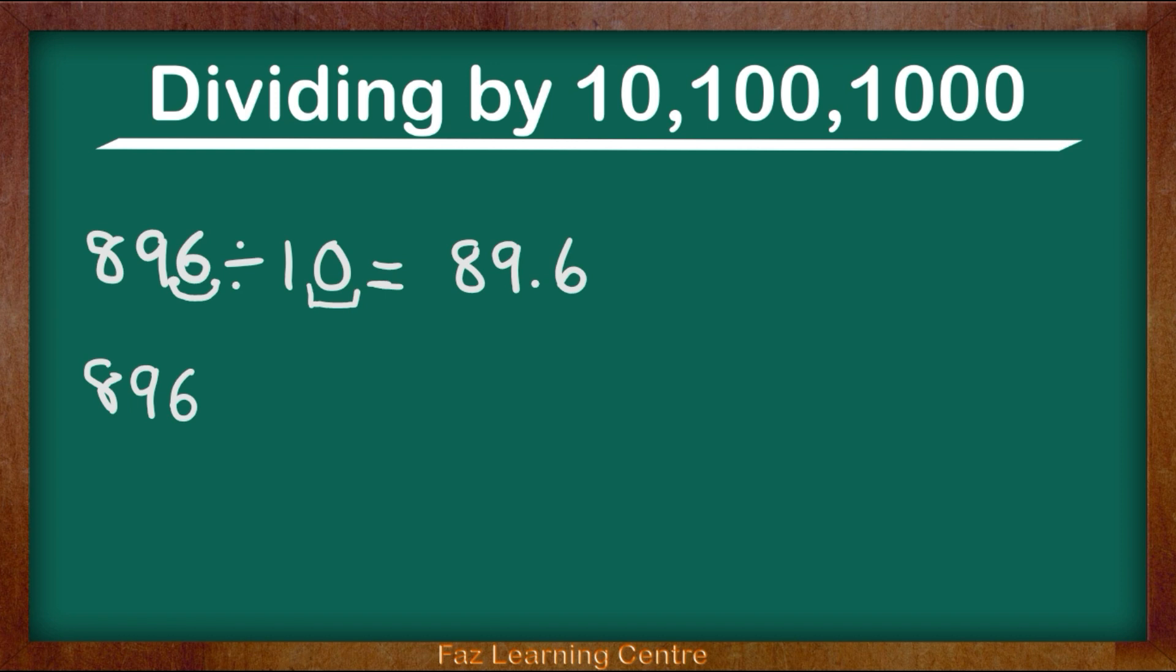896 divided by 100. The first thing we are going to ask ourselves is how many zeros does 100 have? It has 2 zeros: 1, 2.